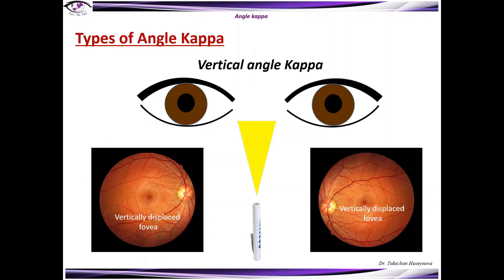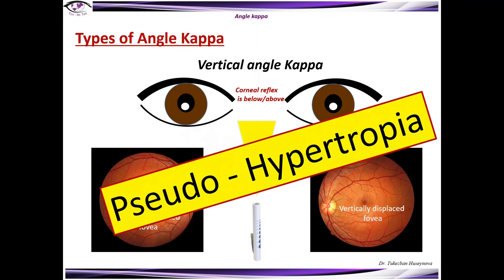There is also a vertical angle kappa, where the corneal reflex can be below or above. This is a sign of a vertically displaced fovea due to displacement of the macula from a retinal scar, and clinically the patient presents with pseudohypertropia.